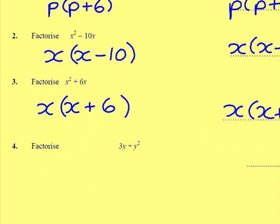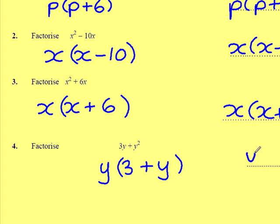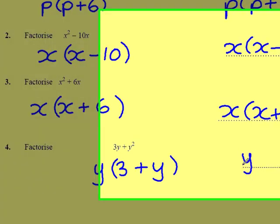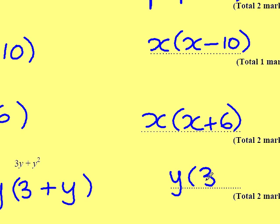Question 4. Factorise 3y plus y squared. This time, the letter's changed, so it's y that's in both. Again, there are no numbers. The only way I'm going to get 3y is if I multiply y by 3. And the only way I'm going to get y squared is if I multiply y by y itself. So, in factorised form, that's y times 3 plus y.